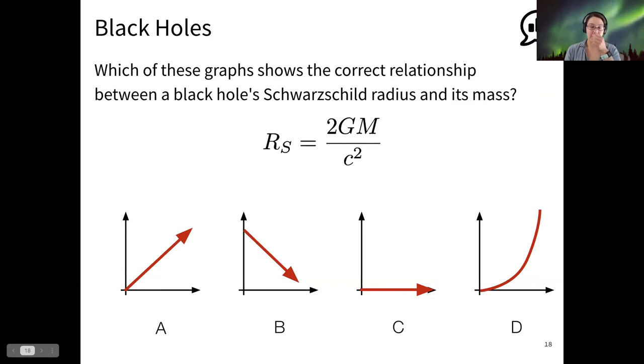So I want to ask you a few questions. Let's suppose that we're plotting mass on the x-axis and radius on the y-axis, and those are the same for all four graphs. Which of these would show the relationship between radius, Schwarzschild radius, and mass for a black hole?